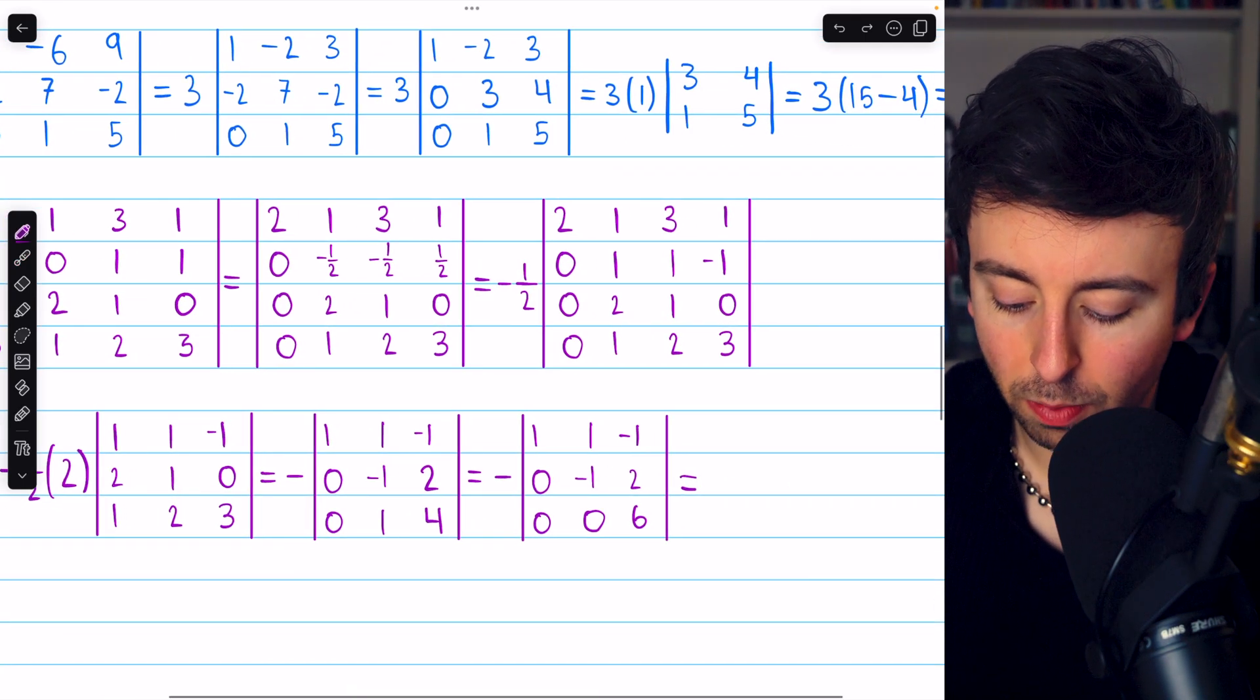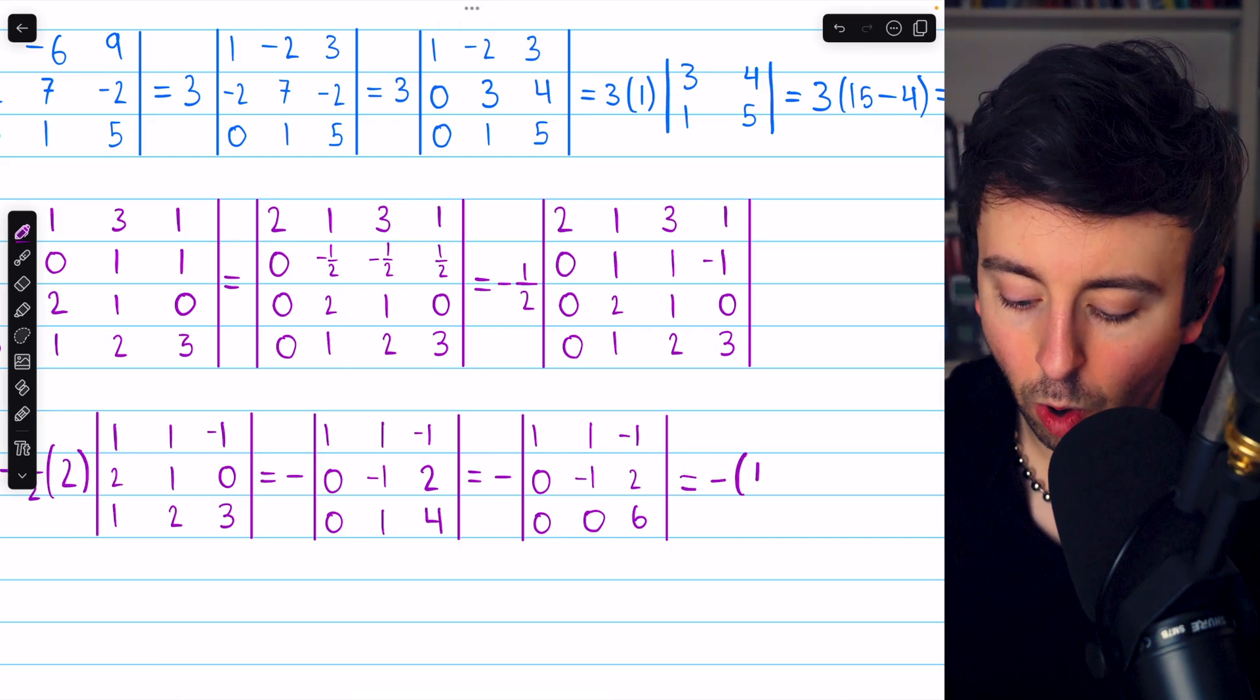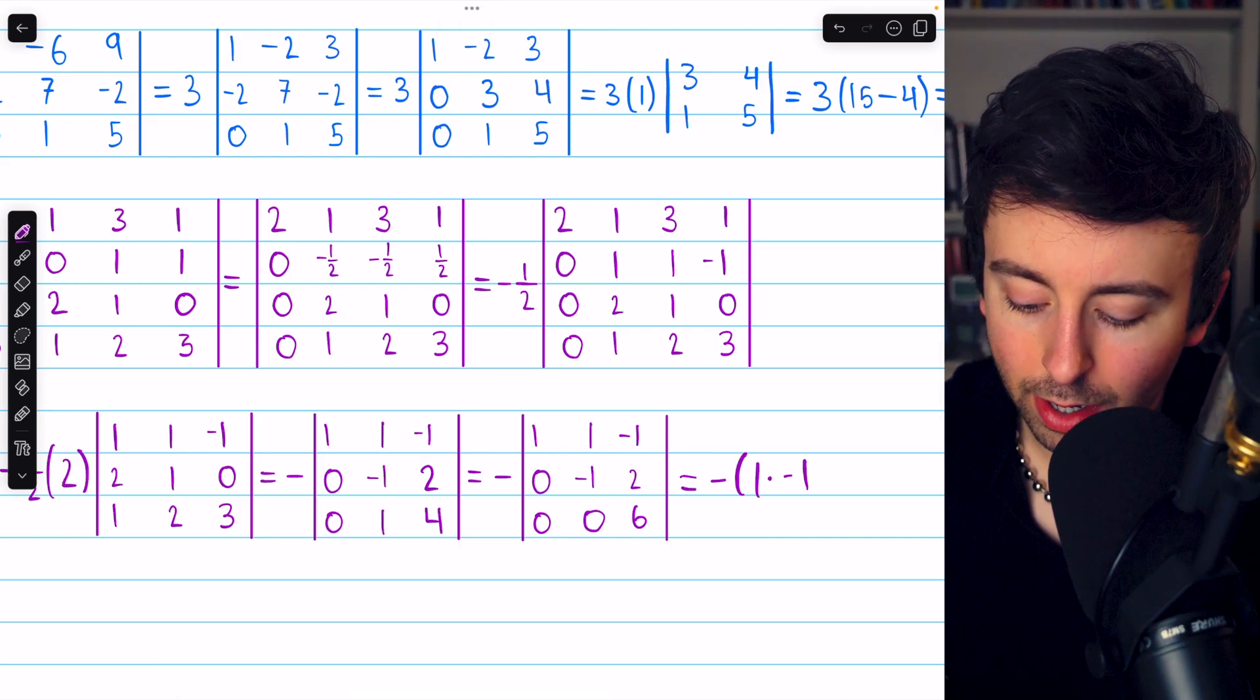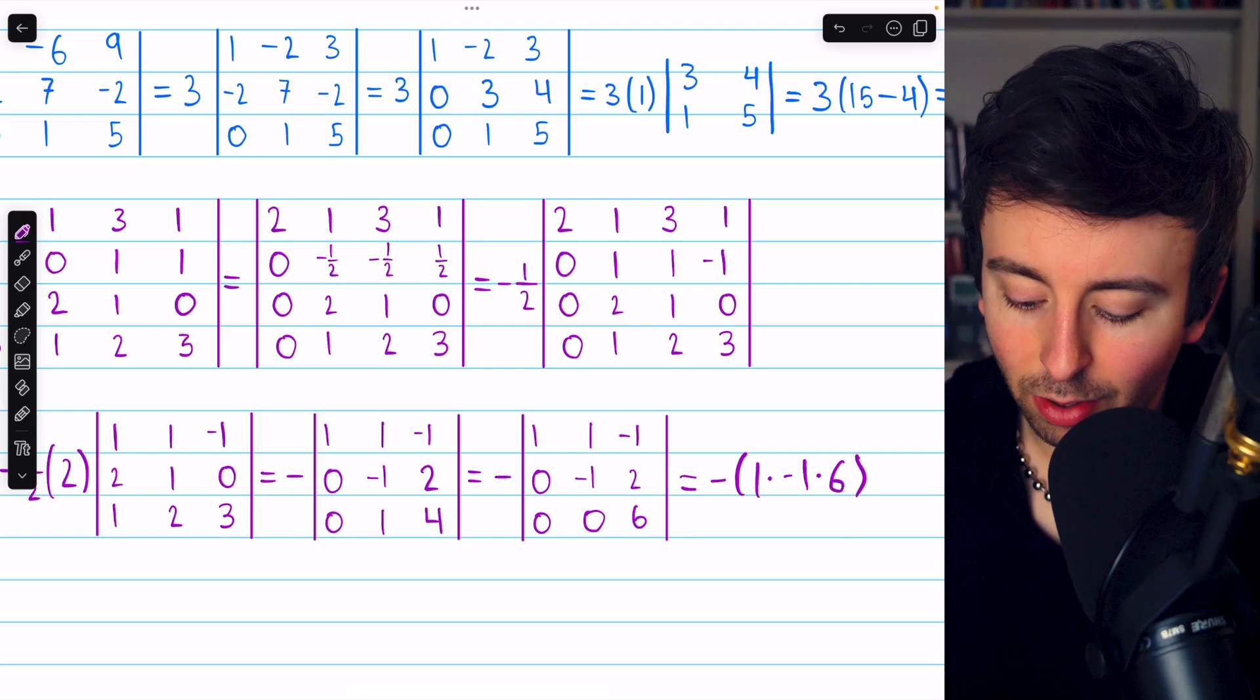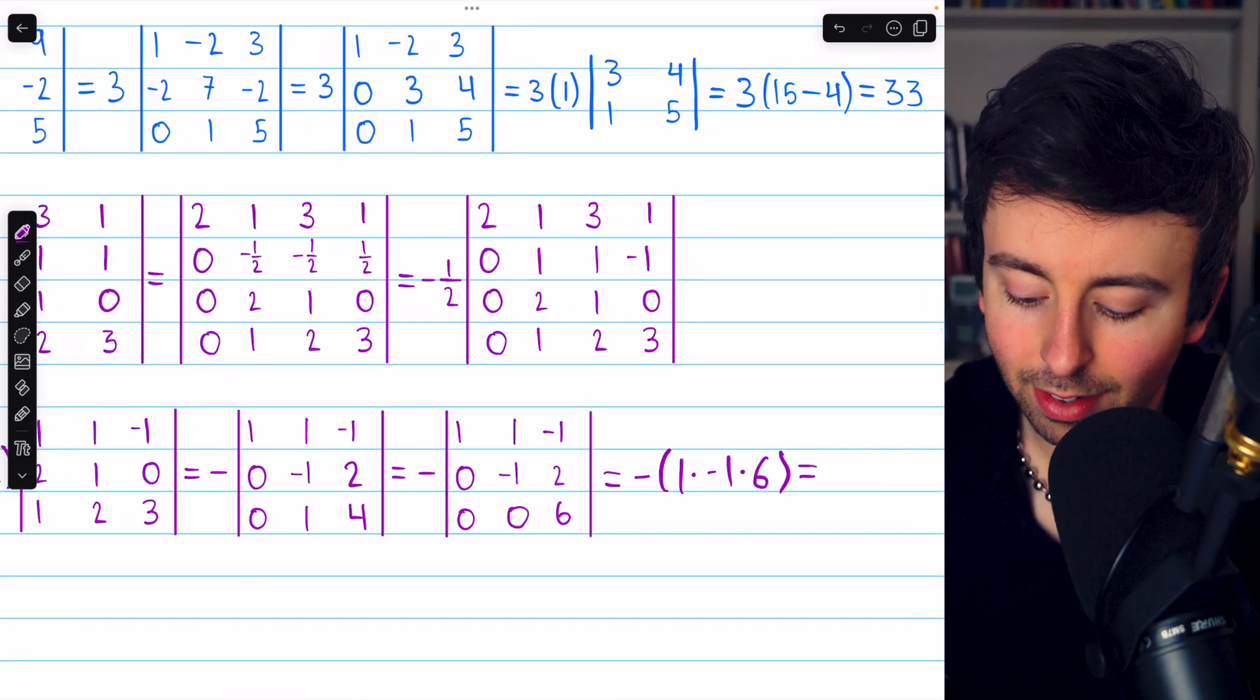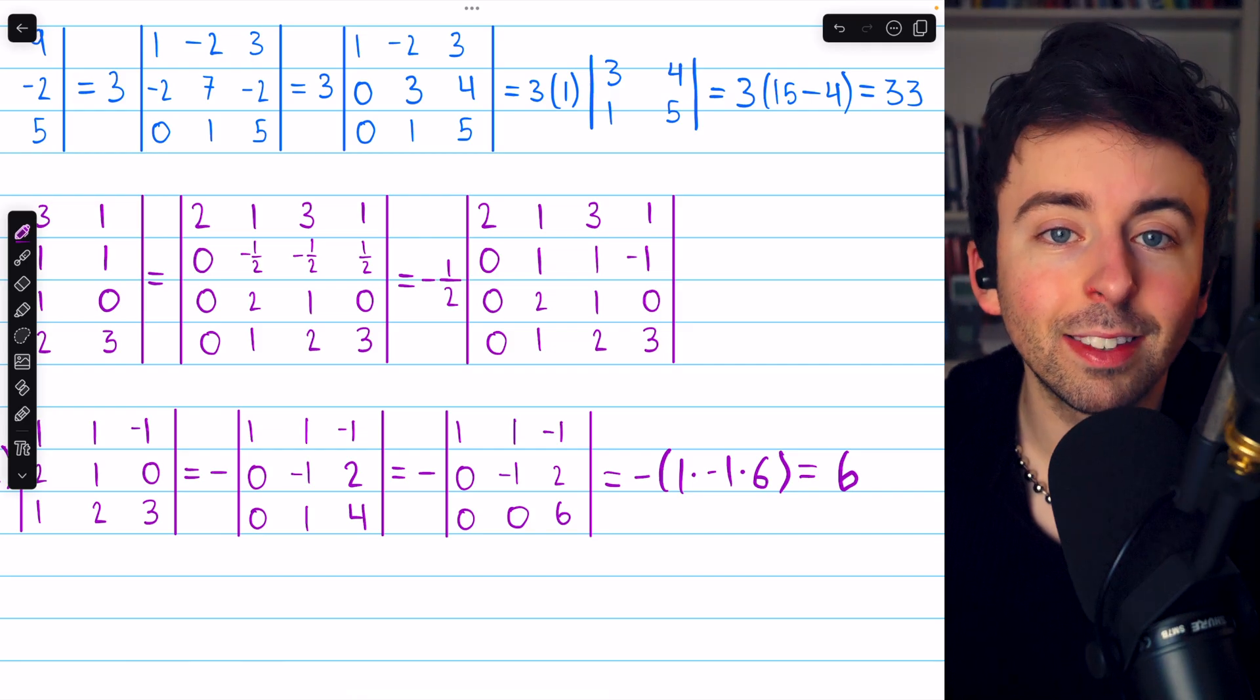So this is going to be negative, still have that negative out front, one times negative one times six, so this is negative negative six, hence the determinant is positive six.